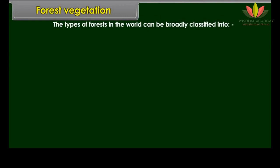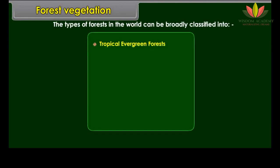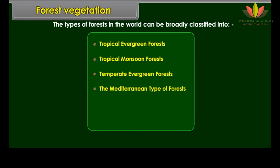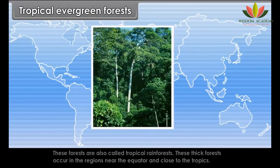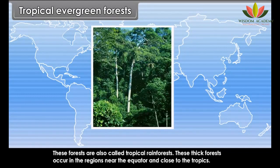The types of forests in the world can be broadly classified into tropical evergreen forests, tropical monsoon forests, temperate evergreen forests, Mediterranean type forests, temperate deciduous forests and coniferous forests. Tropical evergreen forests are also called tropical rainforests. These thick forests occur in regions near the equator and close to the tropics.